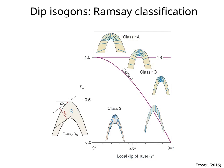These different fold classes are plotted in a diagram. The x-axis is the local dip of the layer, alpha, and the y-axis is t-prime-alpha. Class 1B, or parallel folds, plot along the horizontal line t-prime-alpha equals 1. Class 1A folds plot above class 1B folds, and class 1C folds plot below class 1B folds. Class 2 folds are defined by a curved line in the graph, and class 3 folds plot to the left of the class 2 line.